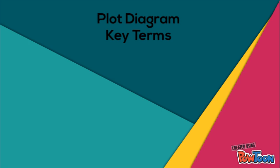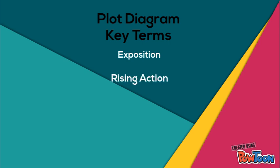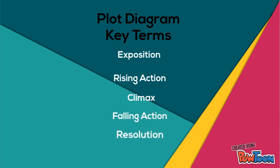Plot diagram has many key characteristics. To review: at the base of the mountain we have exposition; when we climb the mountain we go through rising action; at its zenith we are at the climax; when we descend the mountain we go through falling action; at the base of the mountain we have resolution. All the while we are trying to tackle the conflict of climbing the mountain.